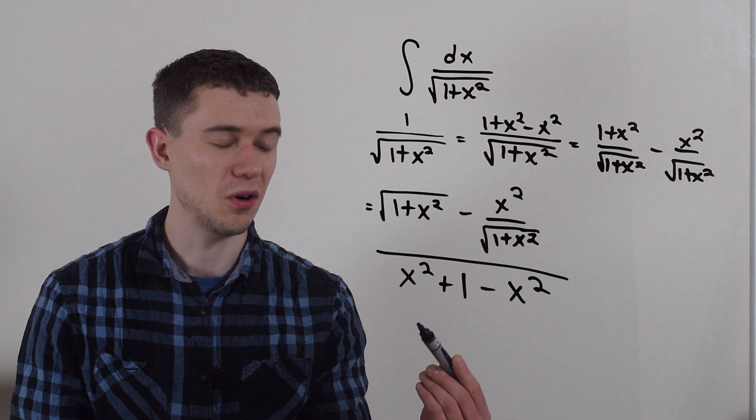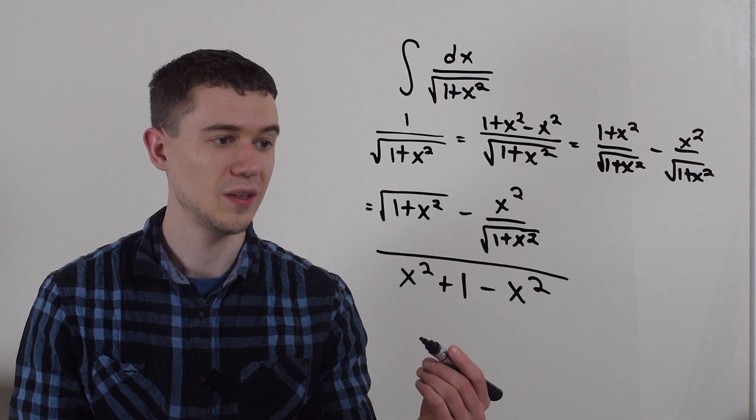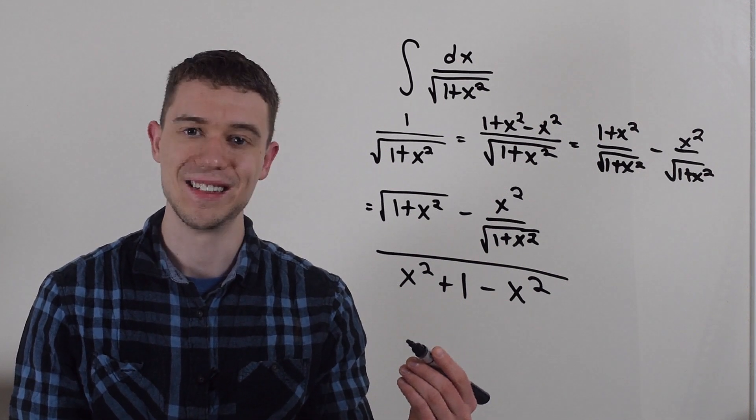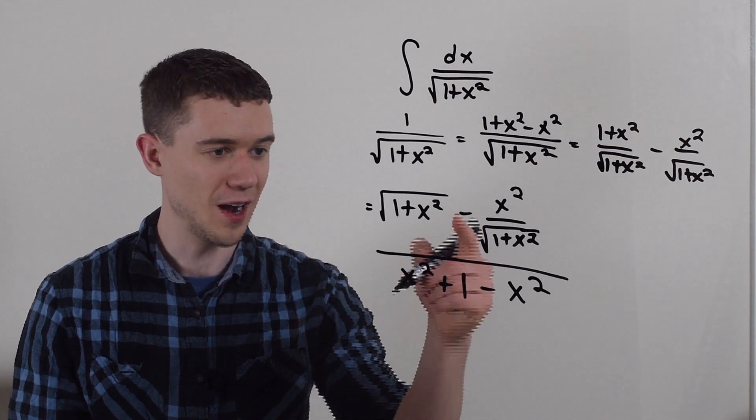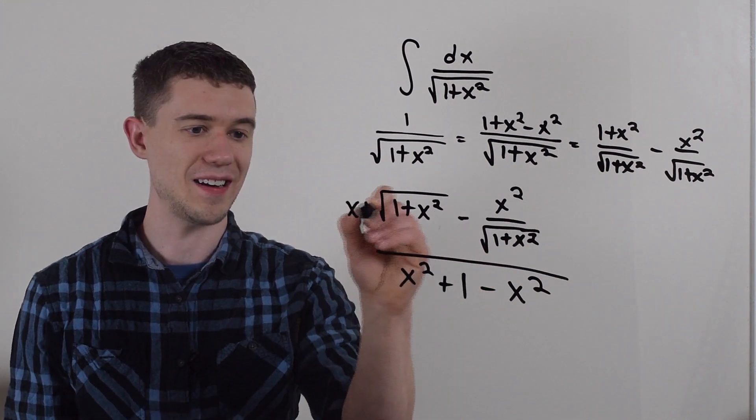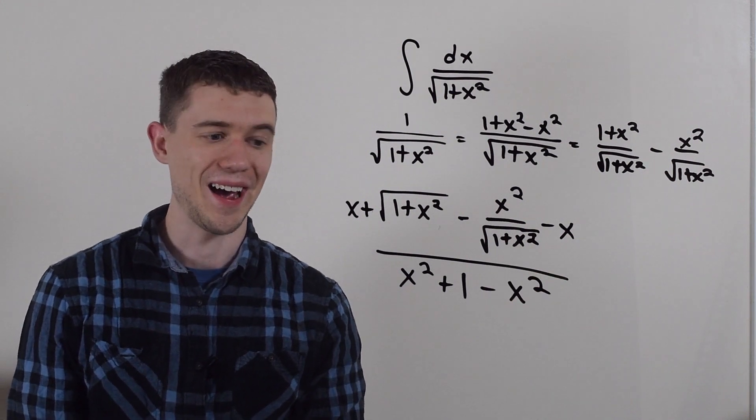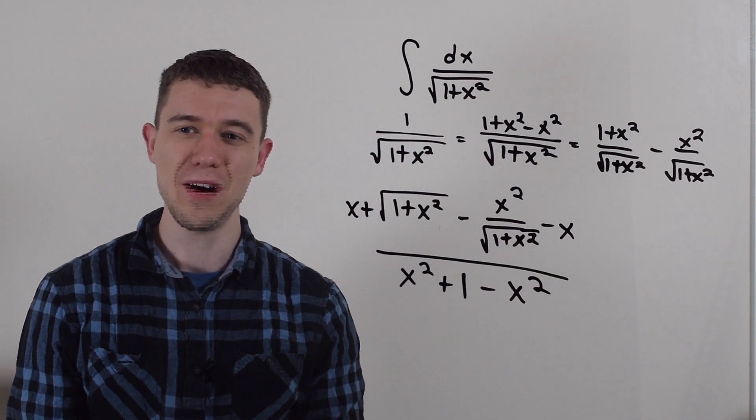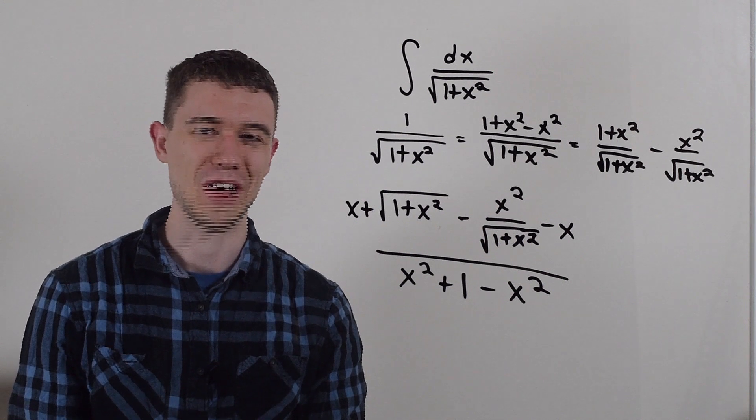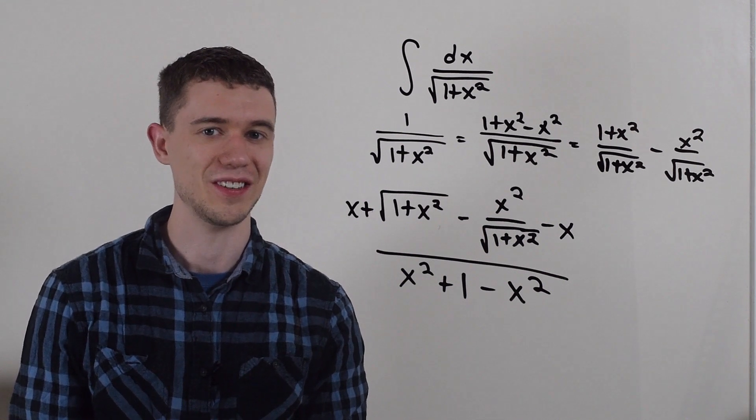And I'm also going to add 0 in the numerator as well. I'm going to add x and subtract x in the numerator. And why am I doing this? Well, now what I'm going to do is I'm going to factor. I'm going to factor the top and the bottom.